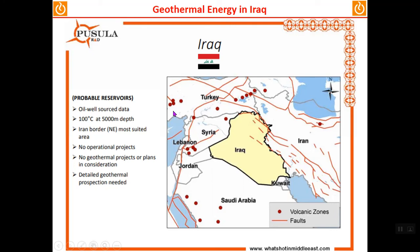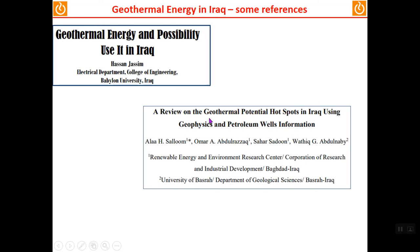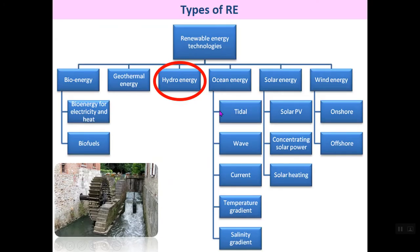As you can see, Iran has different geothermal zones. In Iraq, there is just a small area with geothermal potential. References on the subject include 'Geothermal energy and possibility of use it in Iraq' by Hassan Jassi, and 'A review on geothermal potential of hot spots in Iraq using geophysics and petroleum value information.' These references are provided to open your mind to available research, which you may explore further yourself.